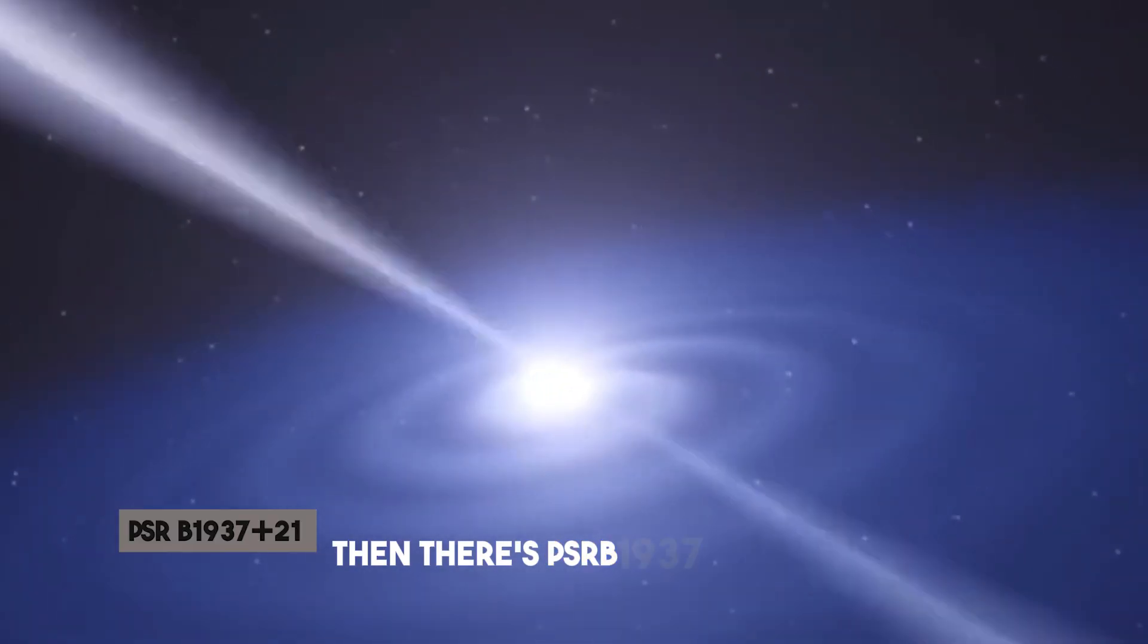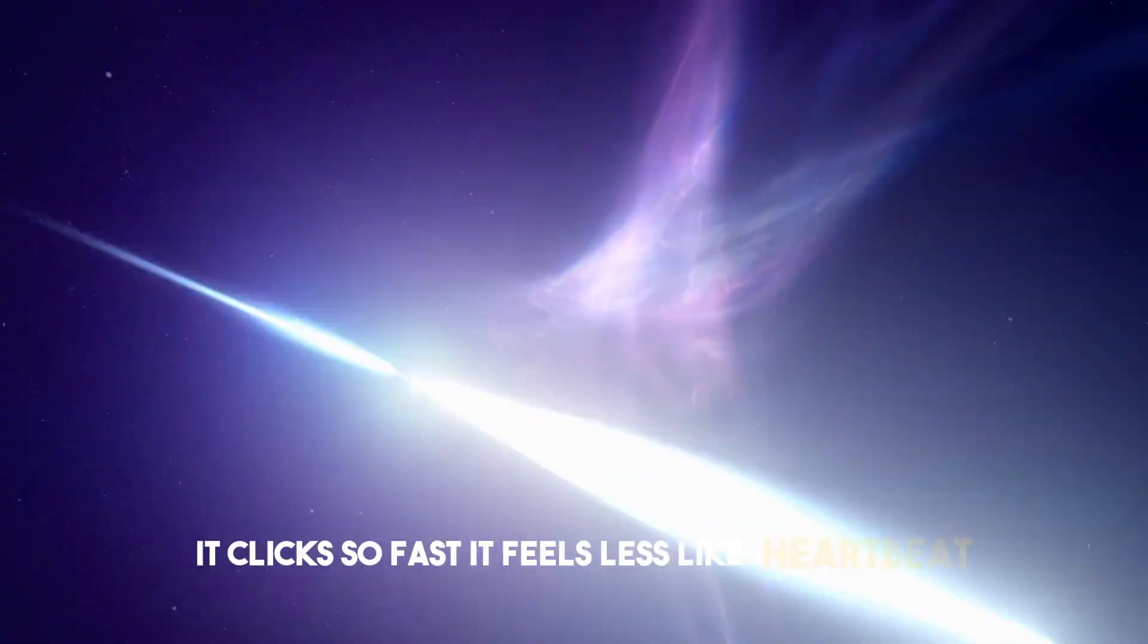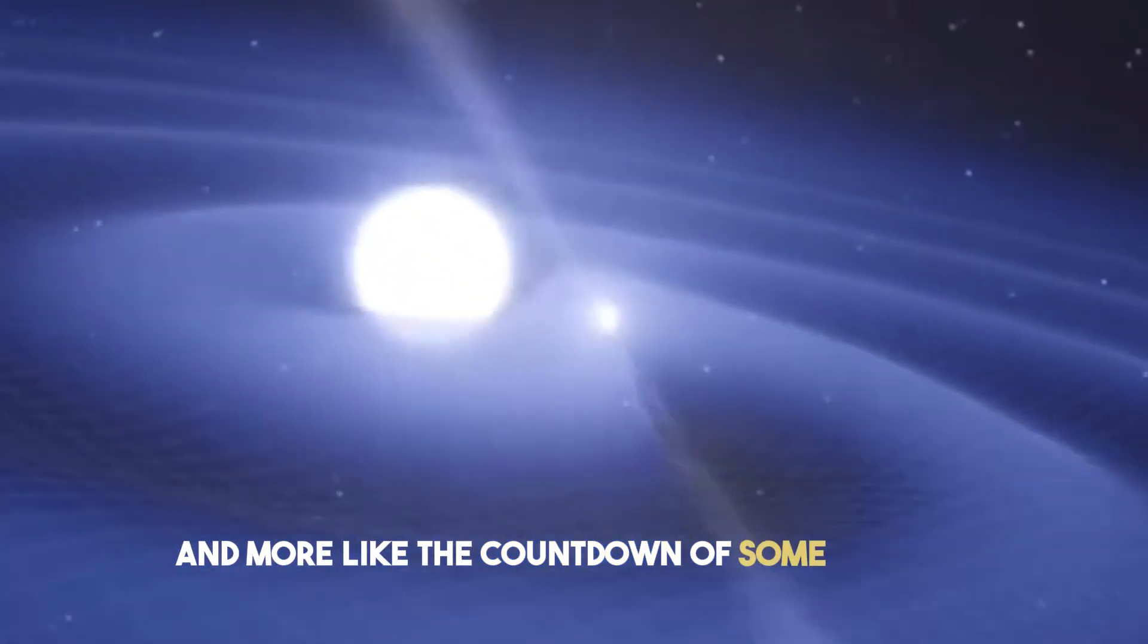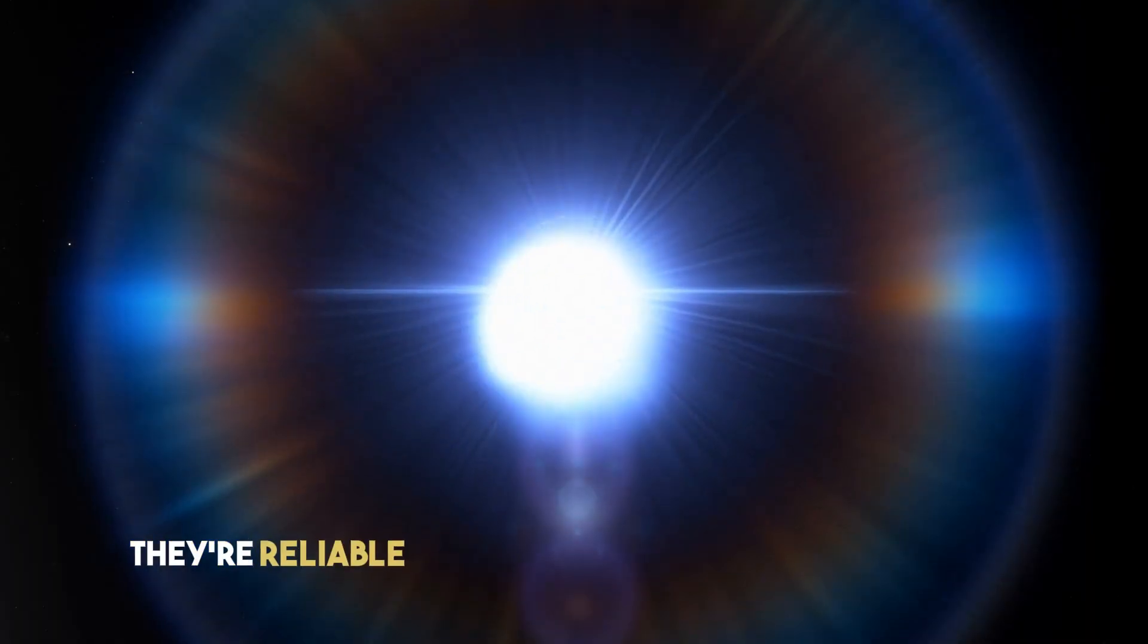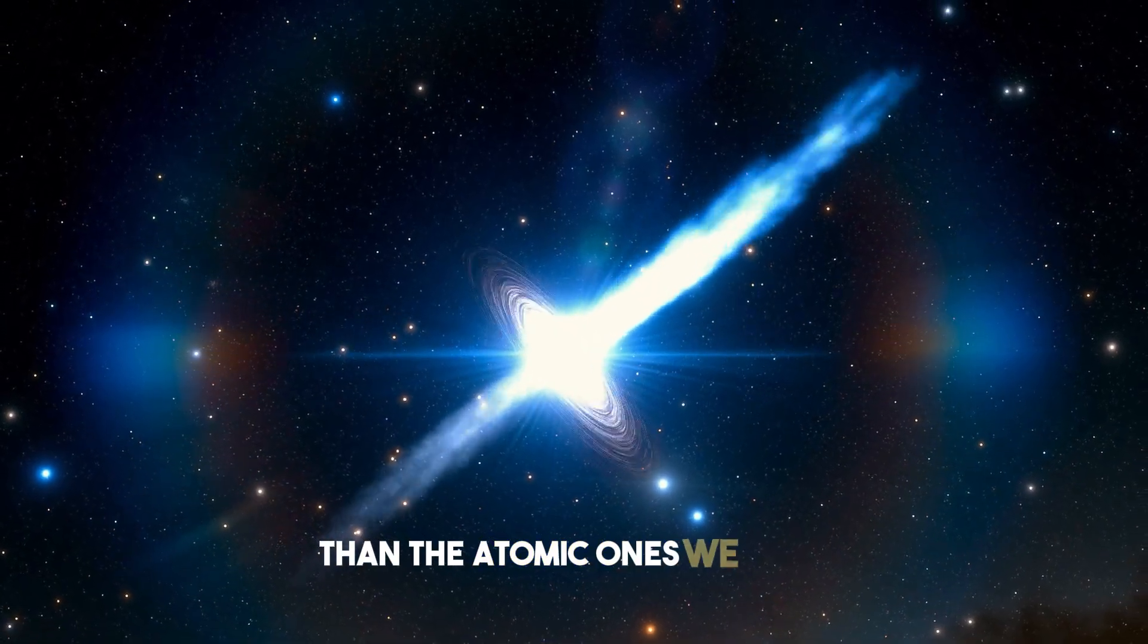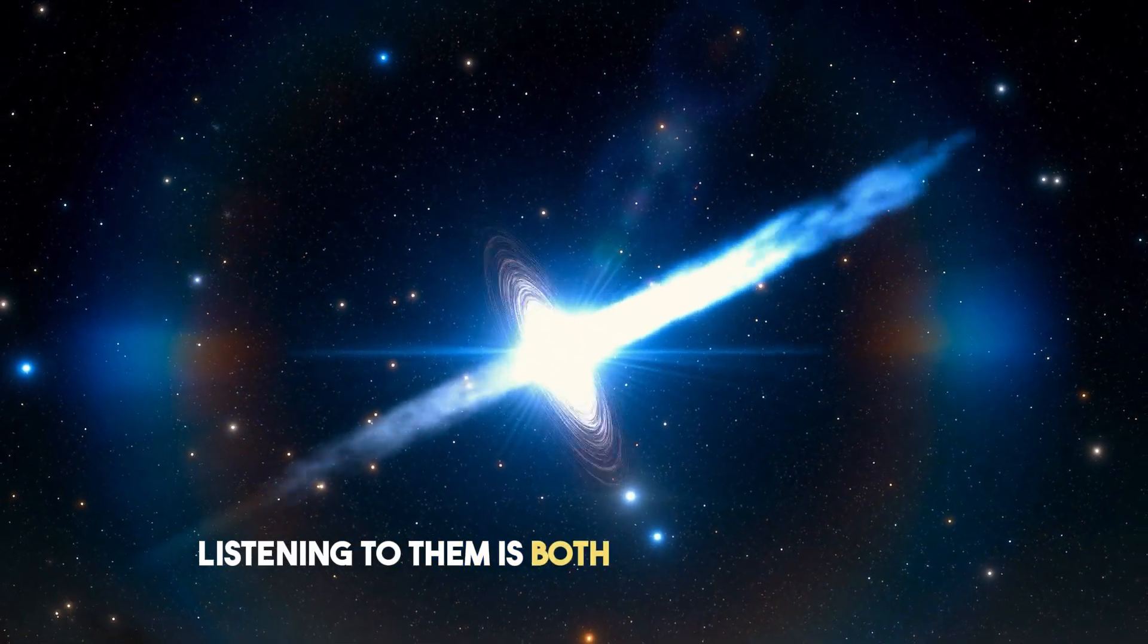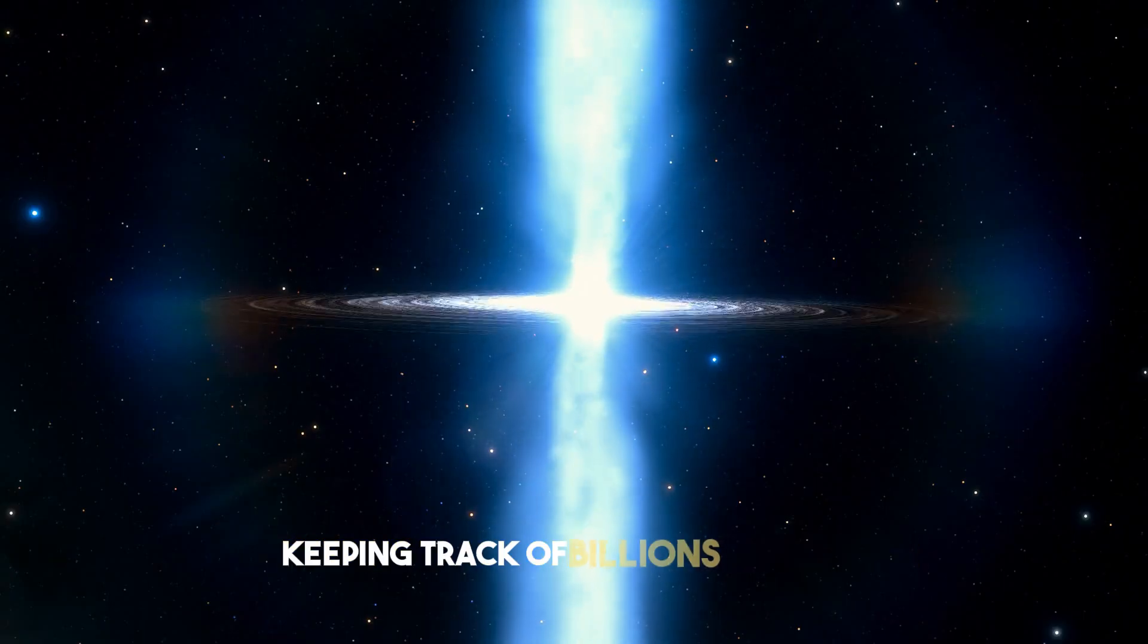Then there's PSRB 1937 plus 21, spinning more than 600 times a second. It clicks so fast it feels less like a heartbeat, and more like the countdown of some machine we weren't supposed to switch on. And the really strange part? They're reliable. Some pulsars keep such perfect time that they make better clocks than the atomic ones we build here on Earth. Listening to them is both creepy and calming, like hearing the universe's metronome keeping track of billions of years.